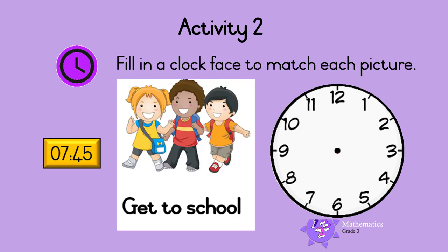Here is another one. At quarter to eight in the morning, you get to school. Show this time on the analog clock — let's do this one together. The hour hand should point between seven and eight, because it is after seven o'clock but before eight o'clock. And the minute hand should point to nine to show 45 minutes.